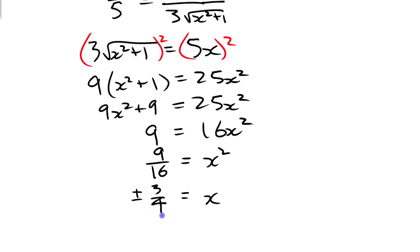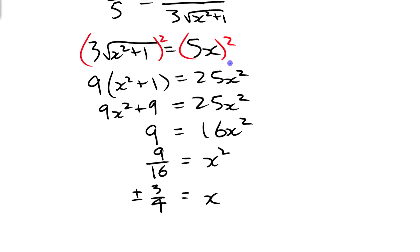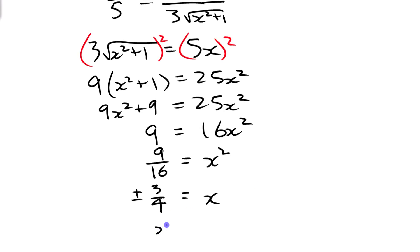We have to reject the negative answer because −3/4 is an extraneous root that occurred when we squared both sides — it is not a solution to the original equation. So we keep x = 3/4, or 0.75.